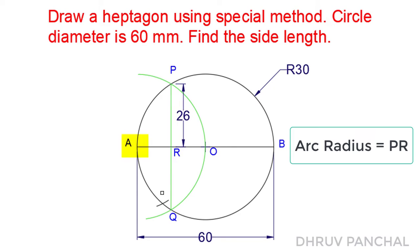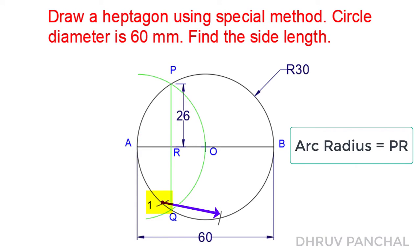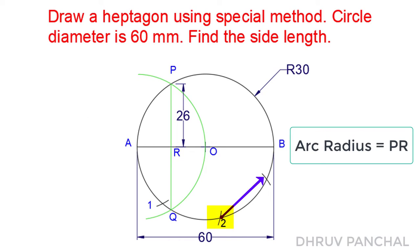With the help of a compass, take point A as center and distance PR as radius, draw an arc on the circle and mark this point as point 1. Take point 1 as center and distance PR as radius, draw an arc on the circle and mark this as point 2. Take point 2 as center with the same radius, draw an arc on the circle and mark this as point 3.